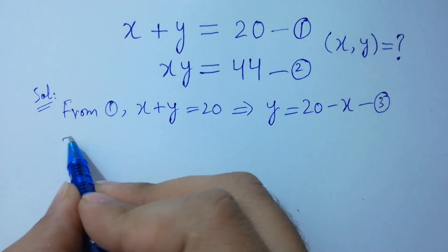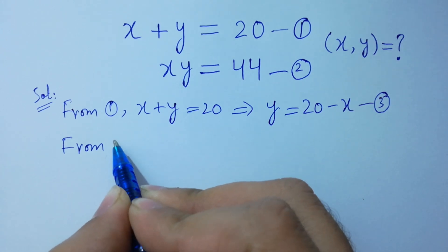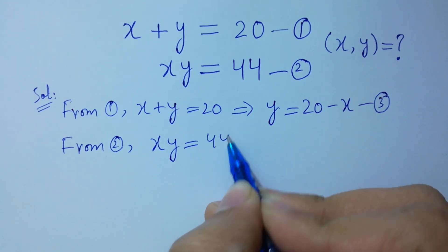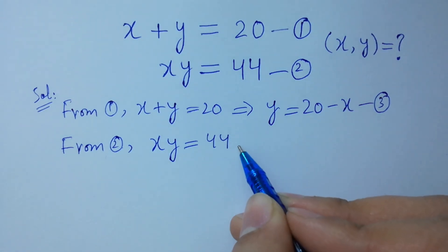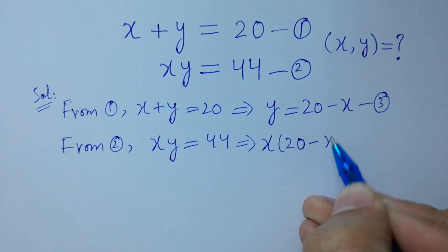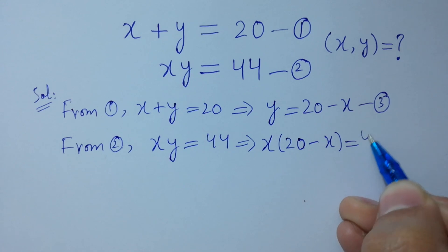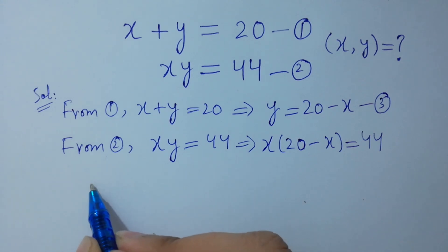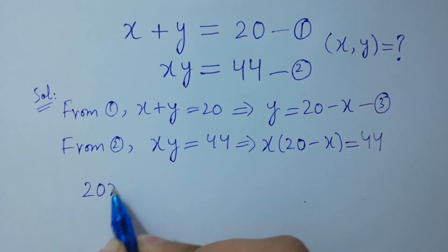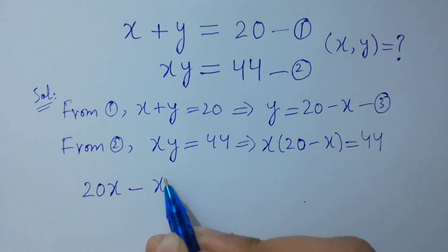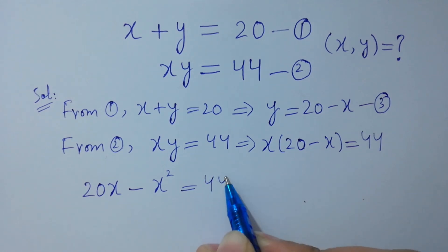From the second equation, x times y equal to 44, put the value of y. We have x times (20 minus x) equal to 44. Expanding: x times 20 is 20x, minus x times x gives x squared, equal to 44.